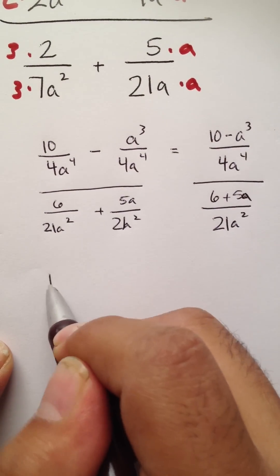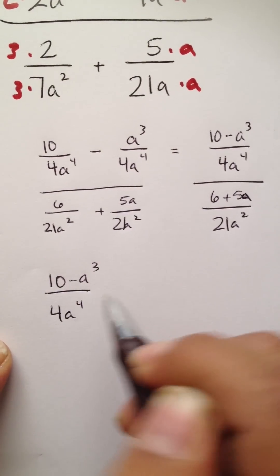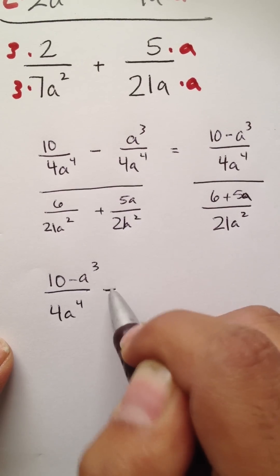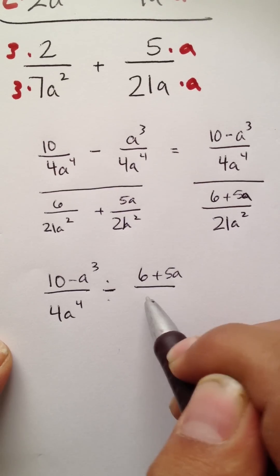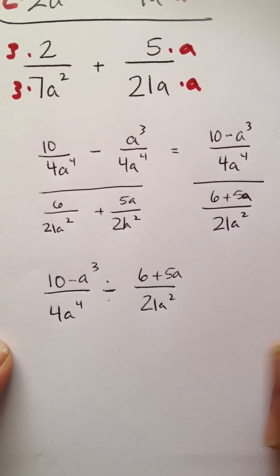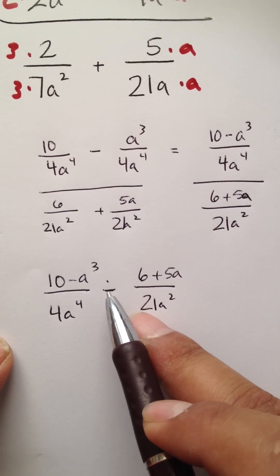You could just rewrite it such as it would say 10 minus a to the third power on top of 4a to the fourth, and then what you could do is just write divide 6 plus 5a over 21a squared. Because fraction bars are a sense of division, so it's okay to write it this way.